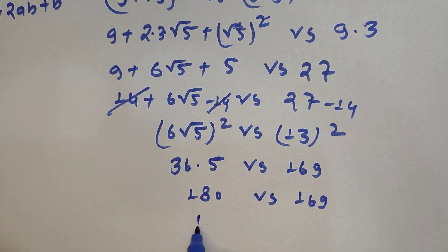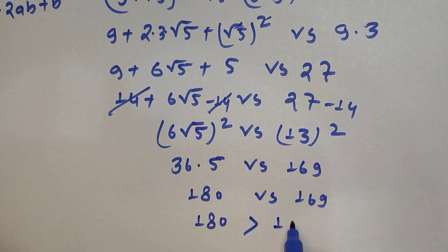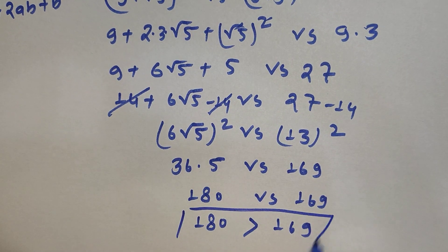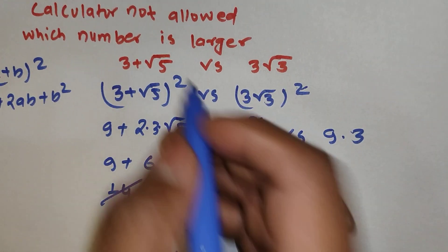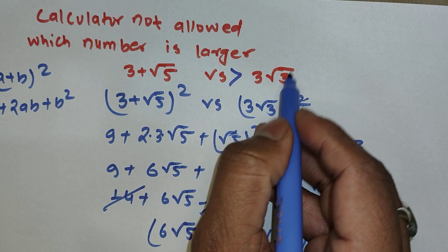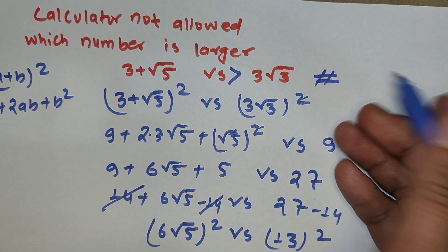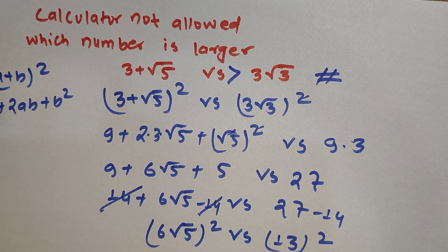We get 180 versus 169, and we can simply say that 180 is greater than 169. So from this conclusion, (3 + √5) is greater than 3√3, which is the final answer. Hope you understood this clearly — if you have any questions, please write in the comment section. Thank you!